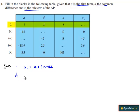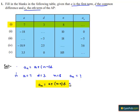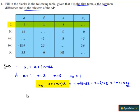Moving on to the first question: the first term a is given as 7, d is given as 3, and n is given as 8. We need to find aₙ. We know that aₙ = a + (n−1) × d = 7 + (8−1) × 3 = 7 + 7 × 3 = 7 + 21 = 28. Therefore, the nth term is 28.